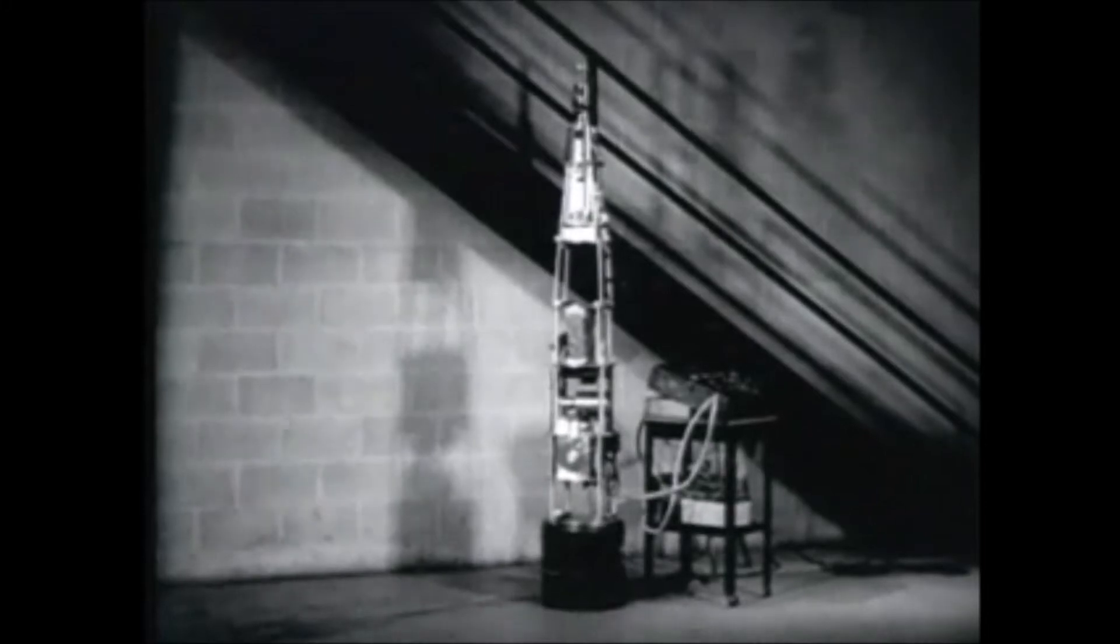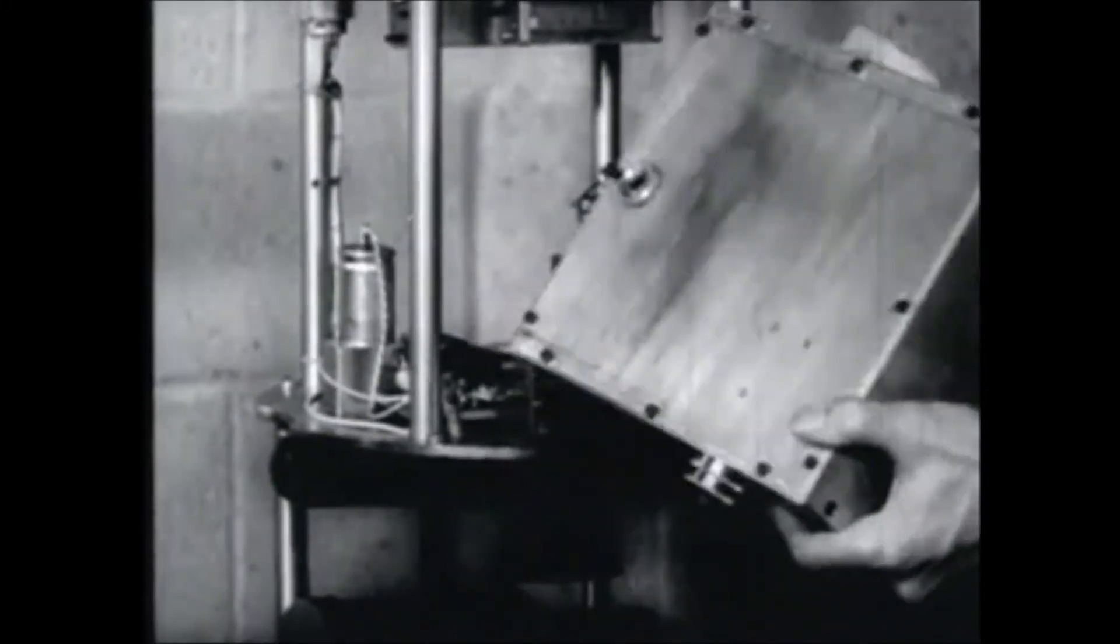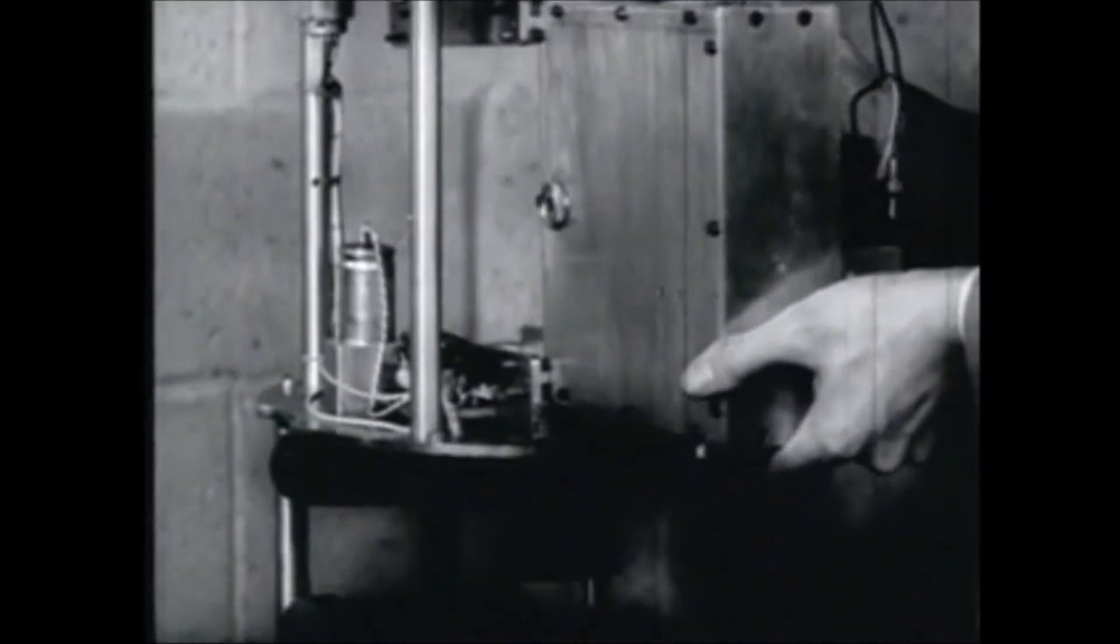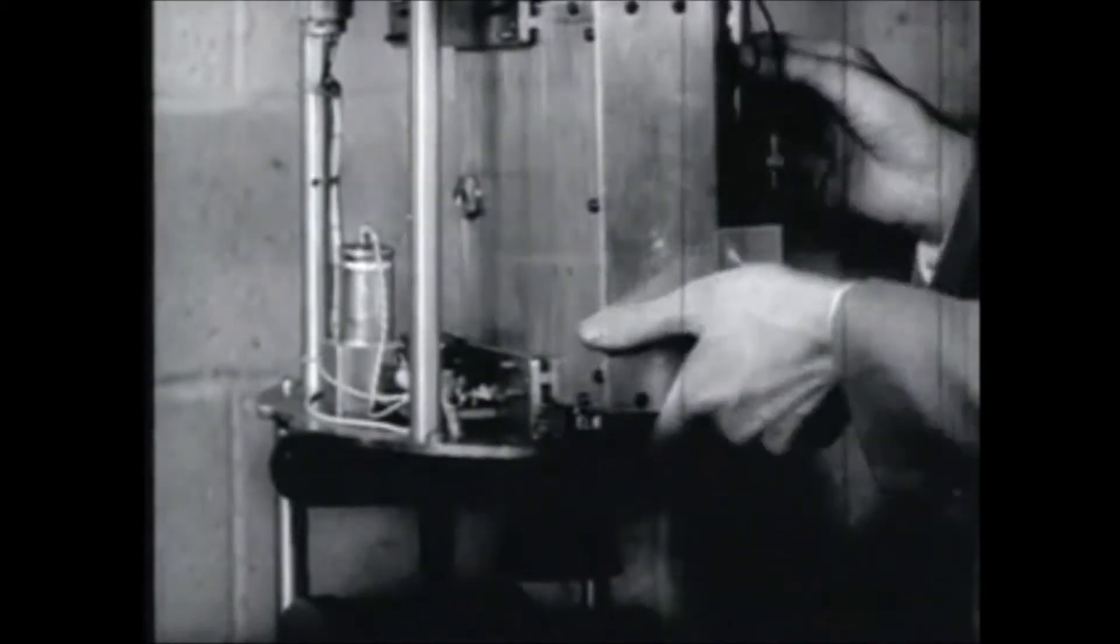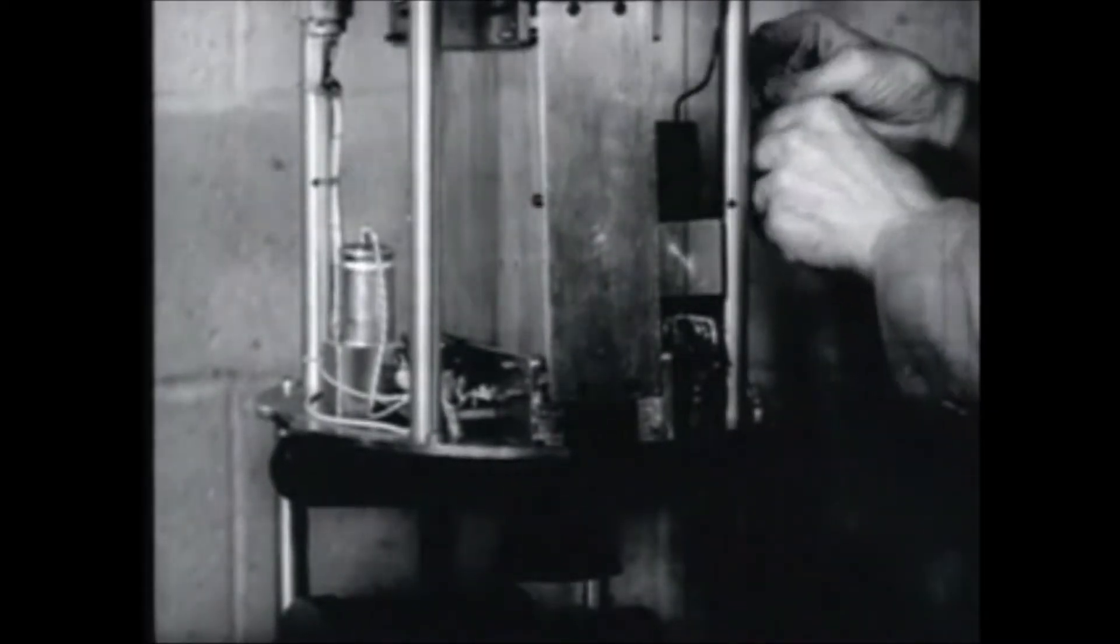On the ground floor of the lab, the nose section of the rocket is fitted together. A motion picture camera is inside this reinforced box, and by using a front surface mirror, it photographs the activities of the mice while the rocket is in flight.